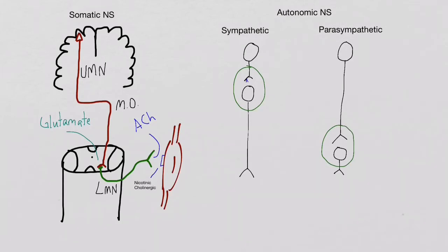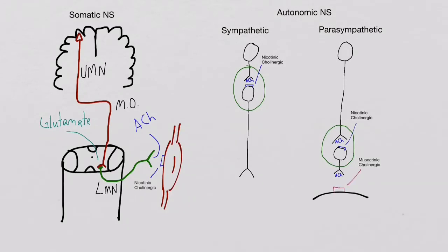The neurotransmitter released from the preganglionic fibers is acetylcholine, and the target receptor of the preganglionic fibers is a nicotinic cholinergic receptor. The neurotransmitter released at the postganglionic fibers in the parasympathetic nervous system is acetylcholine. The target receptor of the postganglionic fiber in the parasympathetic nervous system is a muscarinic cholinergic receptor.